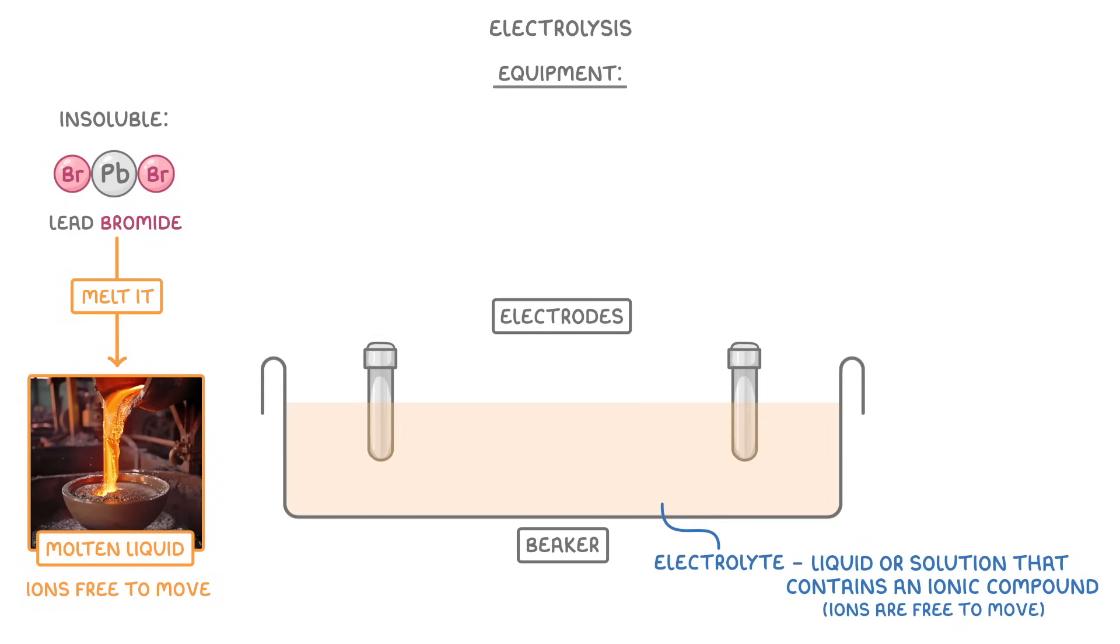Next up we need our electrodes, which are solid conductors and generally made of metal or carbon. On the right we have the positive electrode, which we call the anode, and on the left the negative electrode, called the cathode.